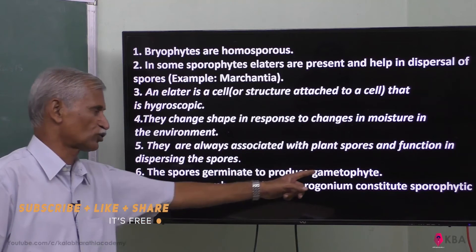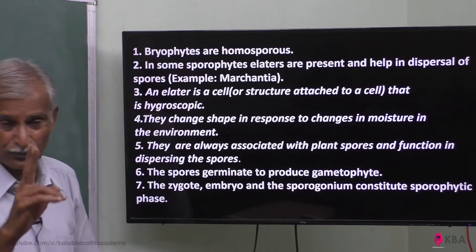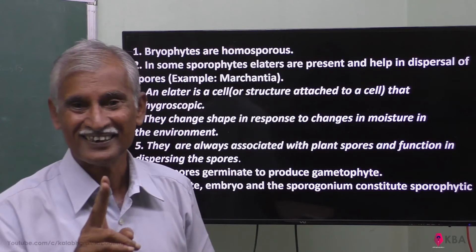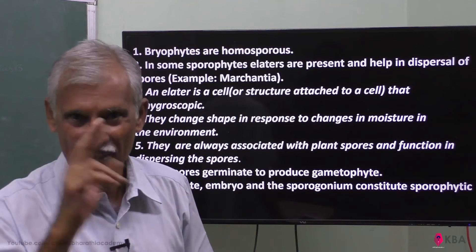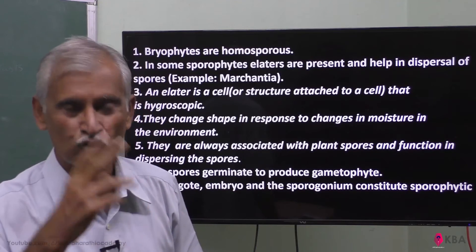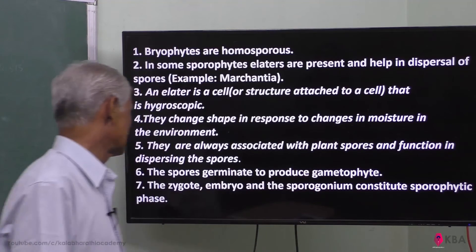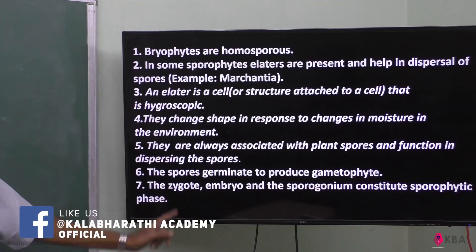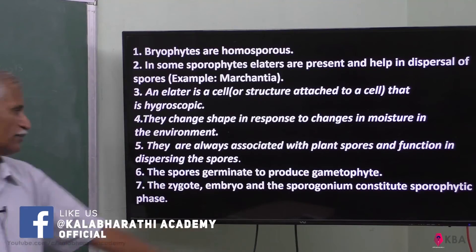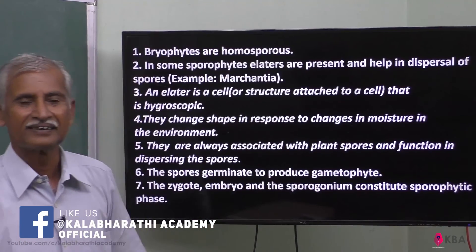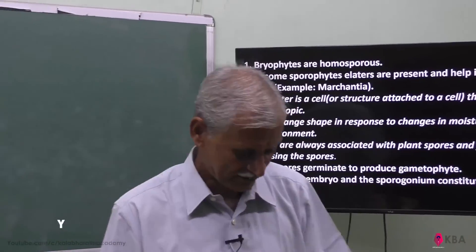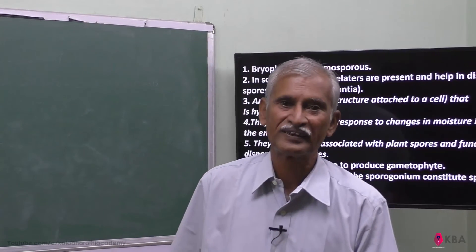The spores germinate to produce the gametophyte. The zygote germinates by meiosis to form the gametophyte. The gametophytic phase is the haploid phase. With this, we close the topic of bryophyte sexual reproduction. Thank you very much, students.